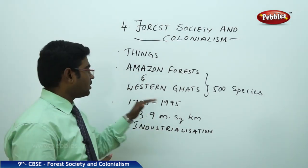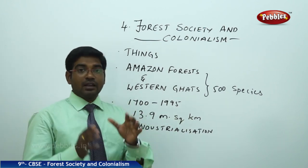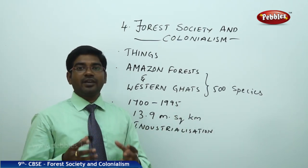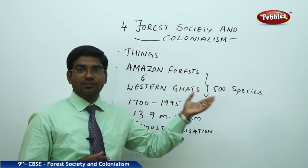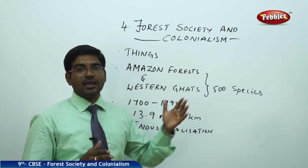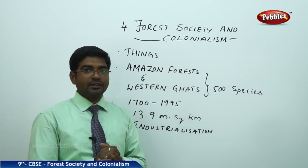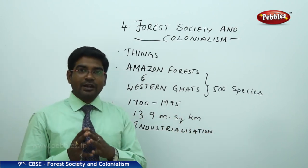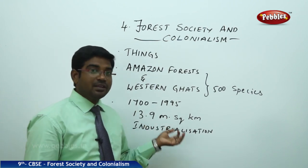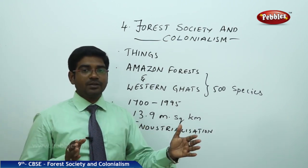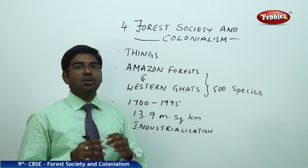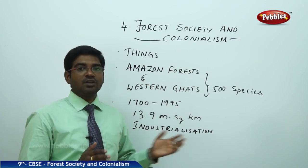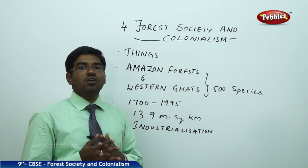If you look at the Amazon forest or the Western Ghats forests, they are a long stretch of forest where you find 500 different varieties of plants and species, and the UN has recognized these as World Heritage Sites recently. From 1700 to 1995, people started to cut down trees — 13.9 million square kilometers of forest have been cleared for various reasons like industrialization or construction. That is nearly 9.3% of the entire forest cover on earth.